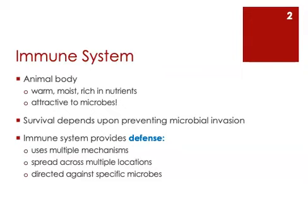Inside the animal body there is an environment that is perfect for microbial organisms to flourish. The animal body is warm, it's quite wet, and it is rich in nutrients — a perfect place for microbes to grow and thrive. The survival of animals therefore depends upon dealing with this potential invasion of pathogenic microbes coming in and creating disease. The animal immune system is what provides that defense.